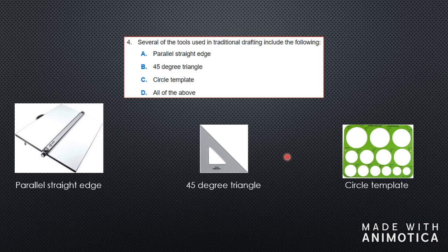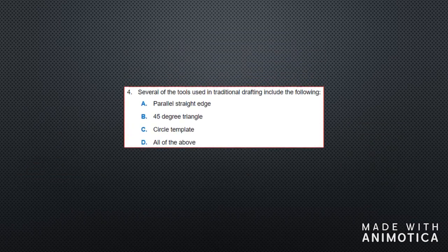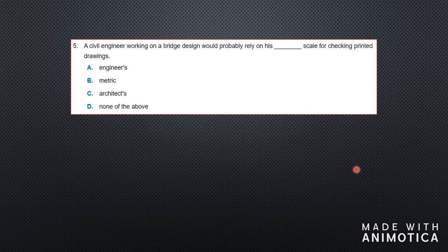You have the parallel straight edge to draw your horizontal lines. You have the 45-degree triangle — or set square as we know it — to draw your angles. And you have the circle templates if you want to draw any circles on the drawing. So several of the tools used in traditional drafting would include all of the above.